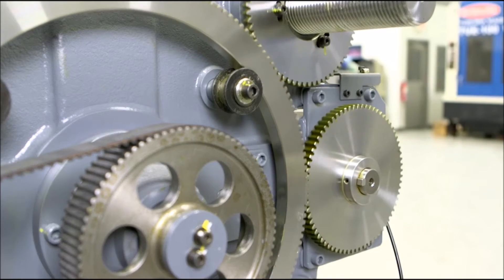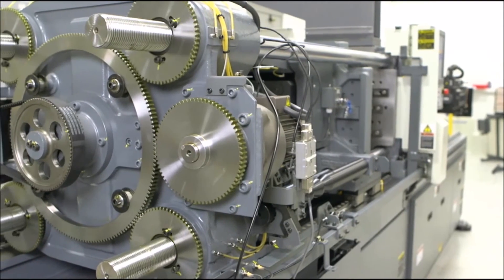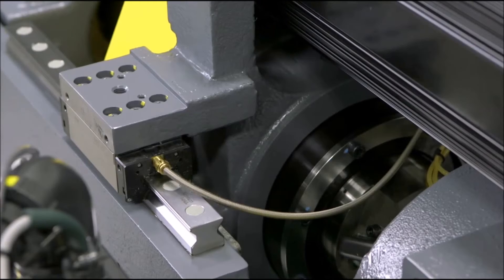The use of a strain gauge on the tie bar allows the tonnage to be set accurately and can be adjusted during the cycle.